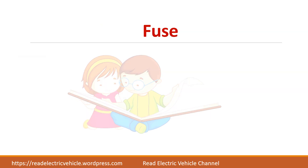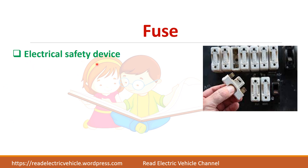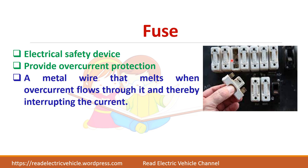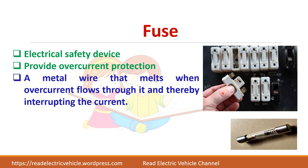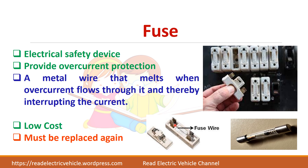First, we will see about the fuse. The fuse is an electrical safety device used to provide overcurrent protection. Whenever there is excess current or overcurrent, the fuse will melt and interrupt the circuit. This type of fuse is found in some equipment. The advantage is that fuses are very cheap, but the drawback is that every time the fuse wire melts, you have to replace it with another wire to reconnect the circuit.